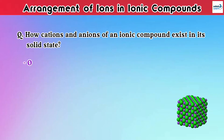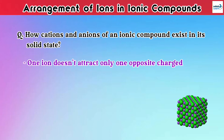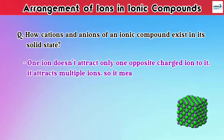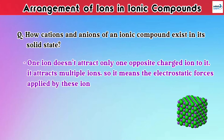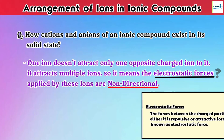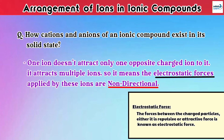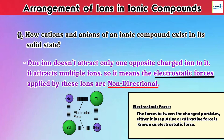Since one ion doesn't attract only one opposite charge ion but attracts multiple opposite charge ions, the electrostatic forces applied by these ions are non-directional. Electrostatic forces are the forces between charged particles — either repulsive or attractive. These forces are non-directional because ions are not attracted by only one opposite charged ion in one direction; they are attracted by multiple opposite charged ions in multiple directions.